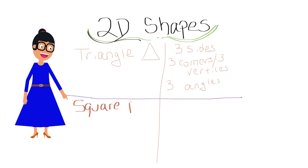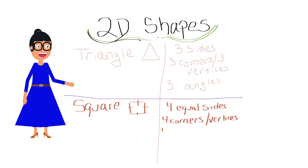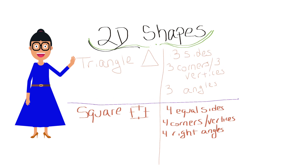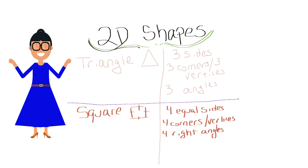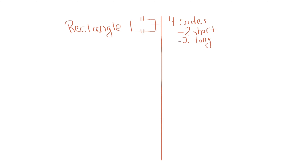Square. It has 4 equal sides, 4 corners or vertices, and 4 right angles. A rectangle has 4 sides — 2 of them are short and 2 are long. It has 4 vertices and 4 right angles.